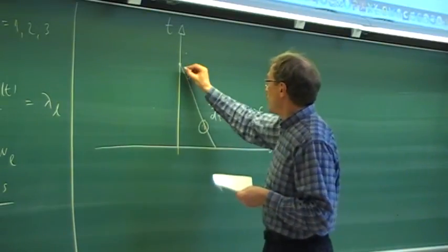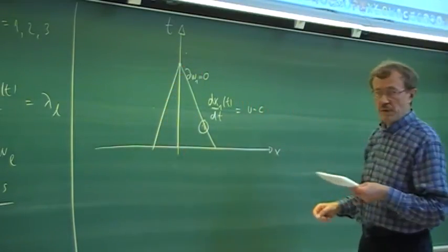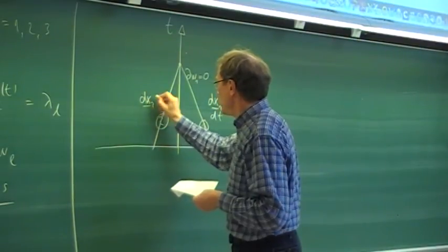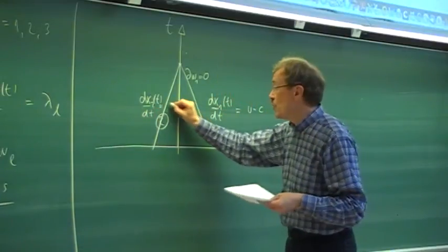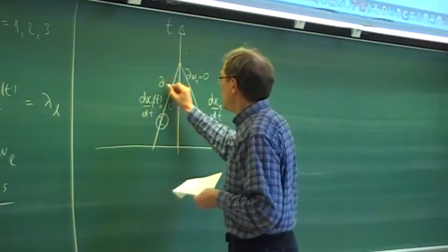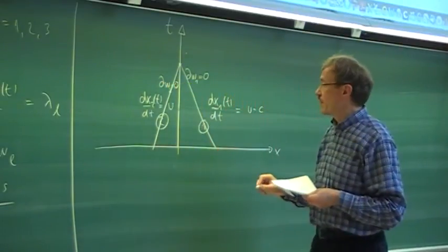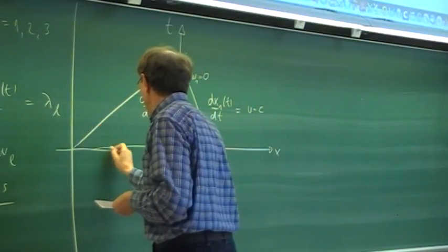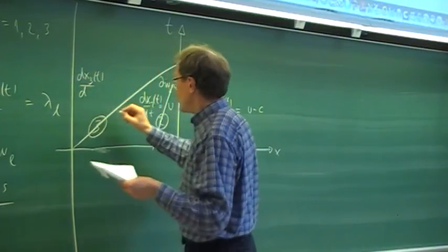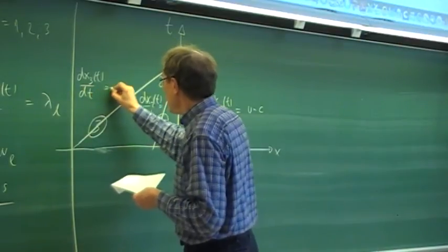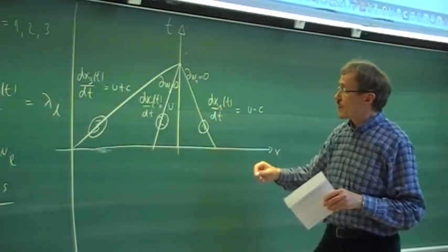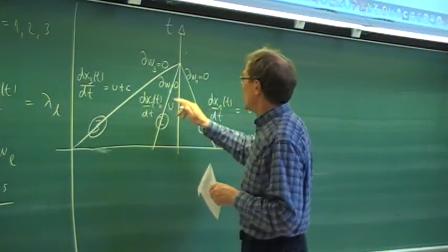Characteristic number two has slope dx2/dt equal to lambda two, which is u. On this characteristic, W2 is constant — dW2 is zero. Then we have characteristic number three, whose slope is given by eigenvalue number three of the coefficient matrix, which is u plus c. So we have slopes u, u minus c, u plus c, and dW3 is constant on characteristic three.